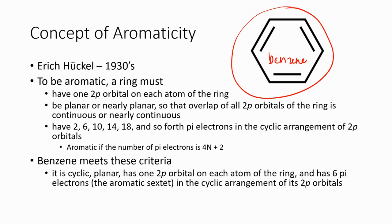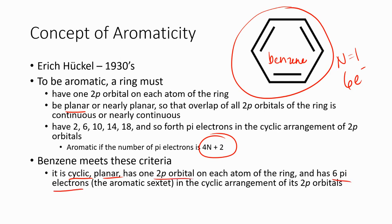To be aromatic, the ring has to have p orbitals on each atom of the ring. It's got to be planar or nearly planar — benzene is planar — so that there's overlap of those p orbitals. It has to have 2, 6, 10, 14, or 18 pi electrons, so it has to meet the 4n+2 rule. Benzene has n=1 for a total of 6 electrons in the pi orbital, and it meets all of the rules: it's cyclic, it's planar, it's got p orbitals on each atom, it's got 6 pi electrons, so it qualifies as aromatic.